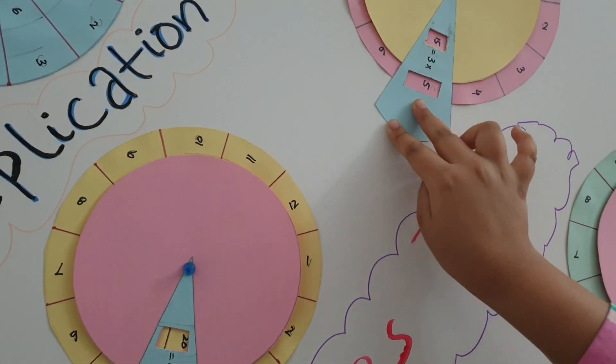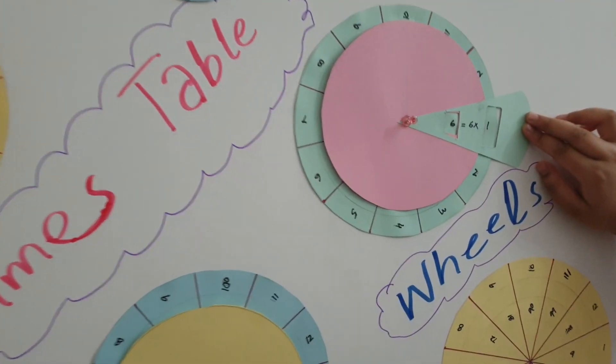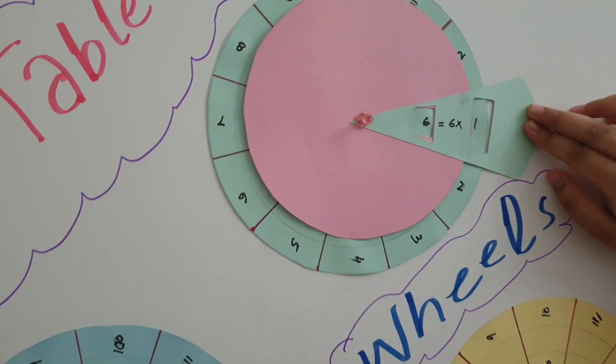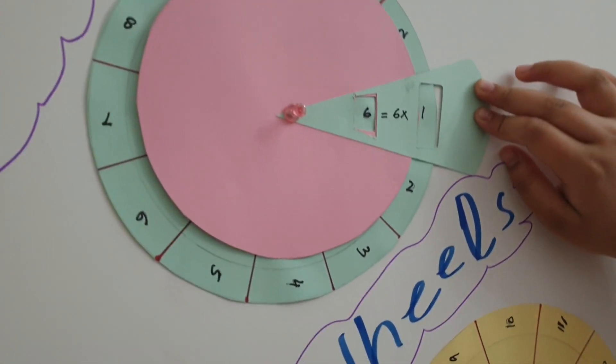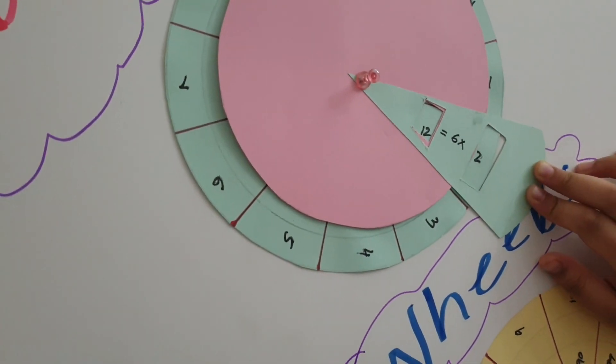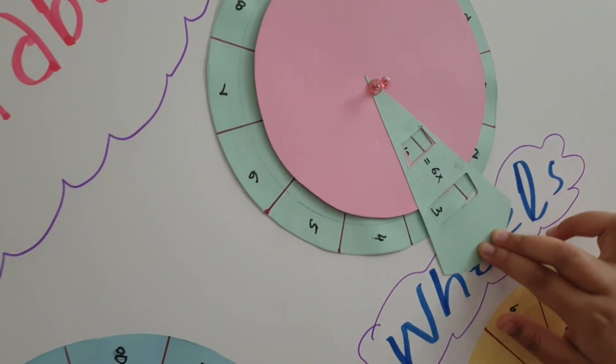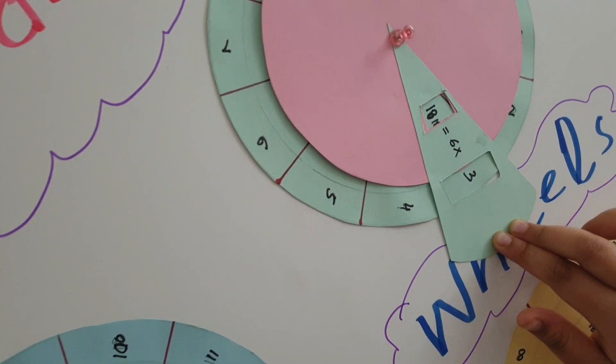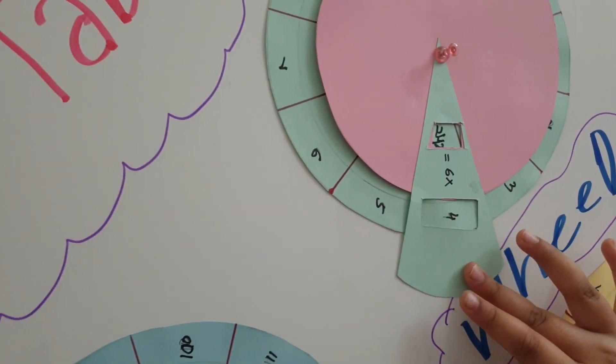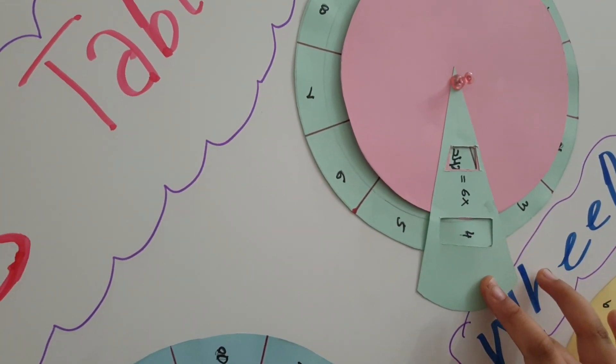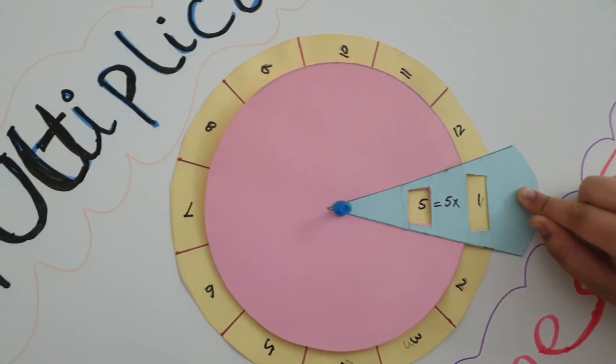This is the sixth timetable. 6 1s are 6, 6 2s are 12, 6 3s are 18, 6 4s are 24. Let's check the 5 timetable.